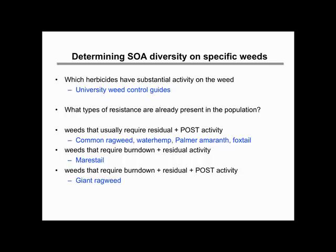If you're going to go through this exercise for specific weeds, it's worth thinking about the ones that are more problematic and the ones we treat more often during a season because of their long emergence pattern or difficulty in control. A weed like lambsquarters, which is relatively easily controlled by residual herbicides, may not be worth this exercise. The weeds to focus on are the ones we already have resistance to or tend to develop resistance in — mare's tail, giant ragweed, waterhemp, Palmer amaranth, and foxtail, which hasn't developed much glyphosate resistance but we spray it a lot.